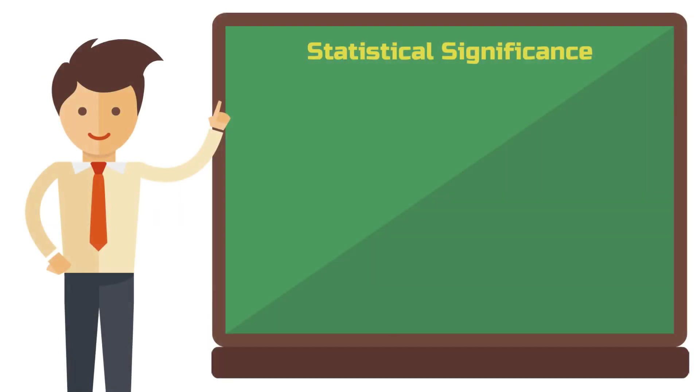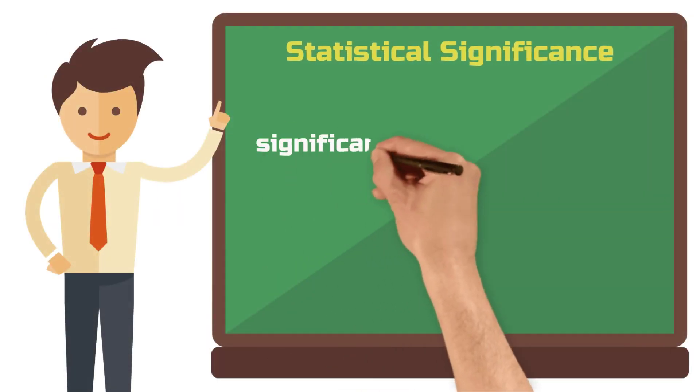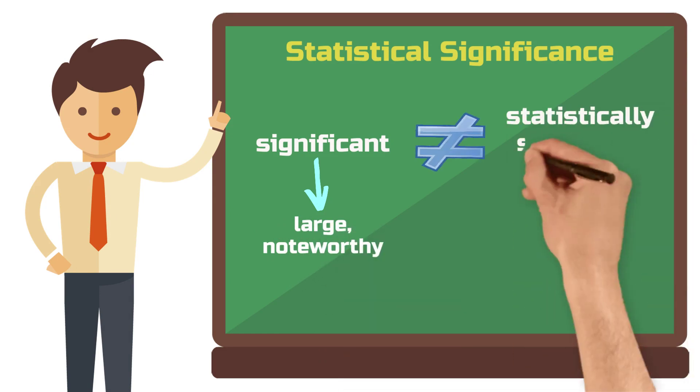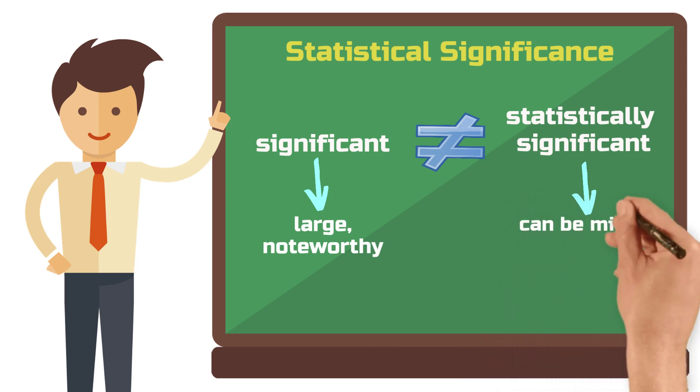First let's distinguish between significance in everyday language and statistical significance. We usually call something significant if it's large or noteworthy. However, statistically significant doesn't necessarily imply importance. Indeed, a statistically significant result can be quite minor and inconsequential in some cases.